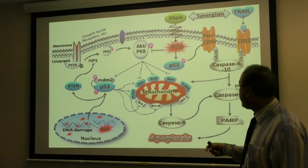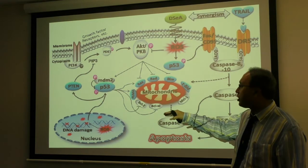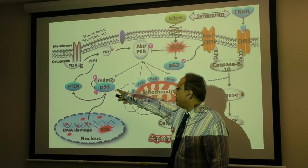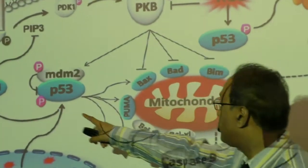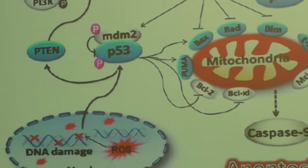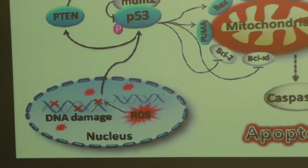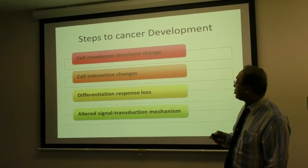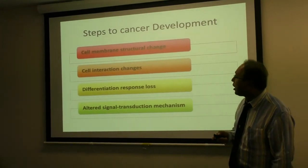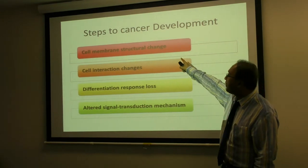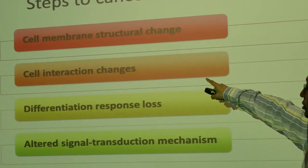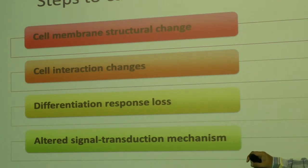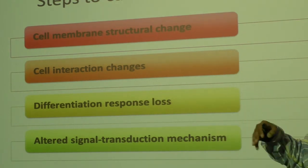At a later stage, in perhaps another lecture, we'll be talking about suppression and activation. A P53 protein can be activated by becoming phosphorylated, so that it causes a self-destruction. But if you don't have that, then the cell will continue to grow. So this is just an introduction to the conditions. Moving on, there are other steps to cancer development, including cell membrane structural changes, cell interaction changes, differentiation and response loss, and altered signal transduction mechanisms.